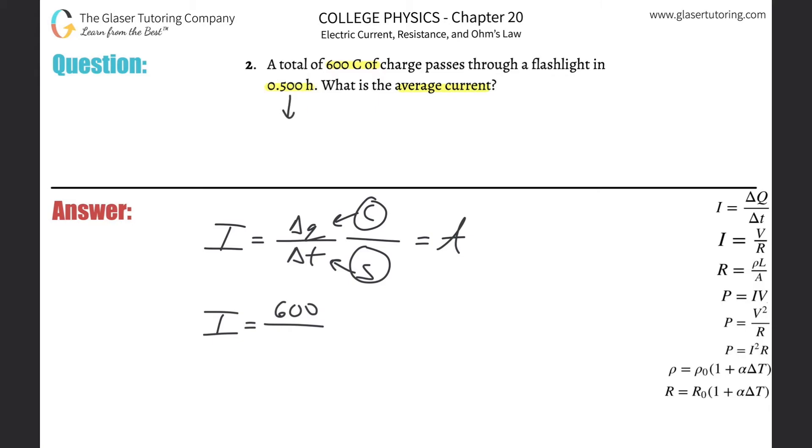So there's 3,600 seconds in an hour. So basically just take 3,600, multiply it by 0.5, which is 1,800 seconds. And simply plug that in now at the bottom: 1,800.